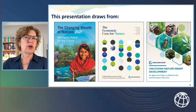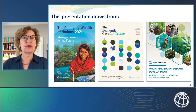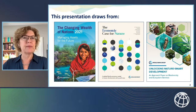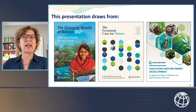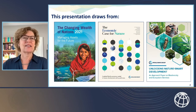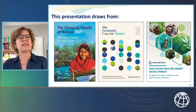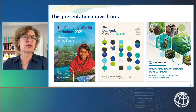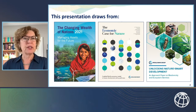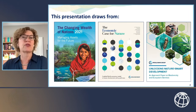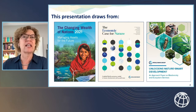This report fills an important data gap because countries regularly track GDP as an indicator of economic progress, but they don't track wealth — the assets such as infrastructure, forests, minerals, and human capital that permit countries to produce GDP in the first place. Changes in GDP measure whether growth is growing, but changes in wealth measure whether this growth is sustainable.